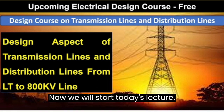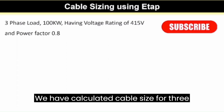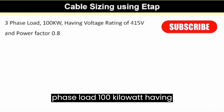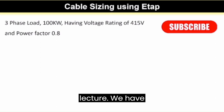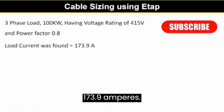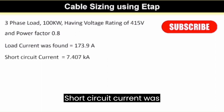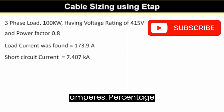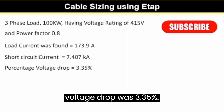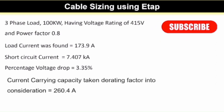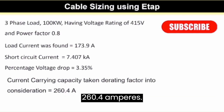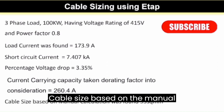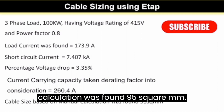Now we will start today's lecture. We have calculated Cable Size for a 3-phase load of 100kW having a voltage rating of 450V and power factor of 0.8 in the previous lecture. We found that the load current was 173.9A, short circuit current was 7.407kA, percentage voltage drop was 3.35%, and current carrying capacity taking the rating factor into consideration was 260.4A.